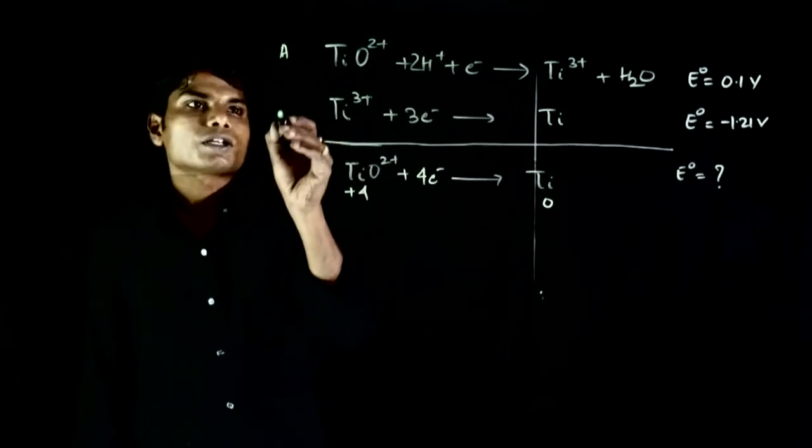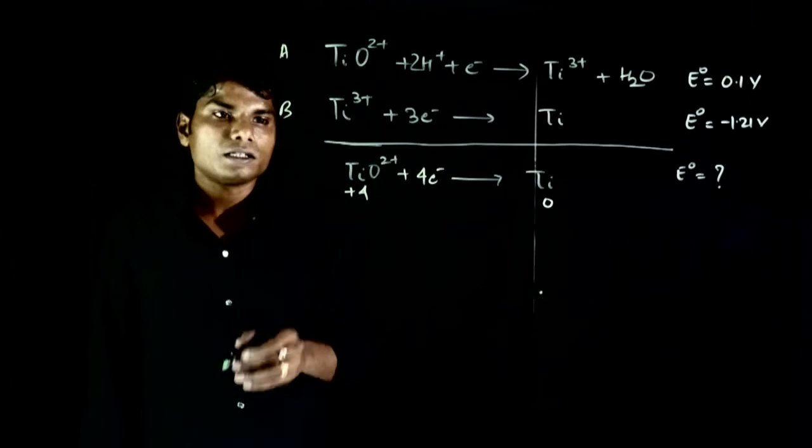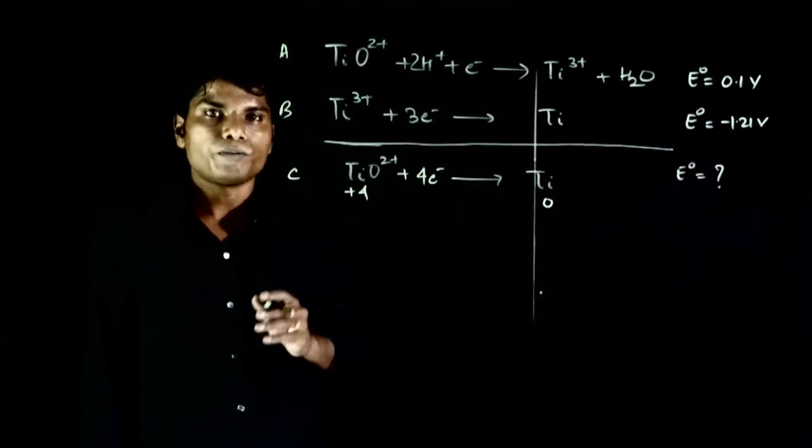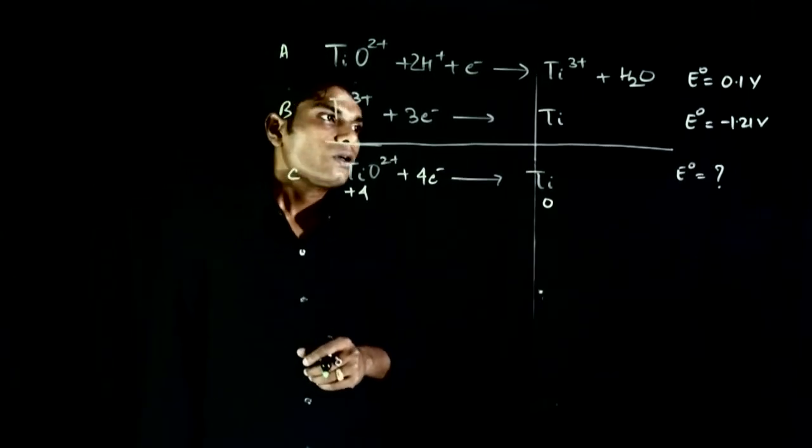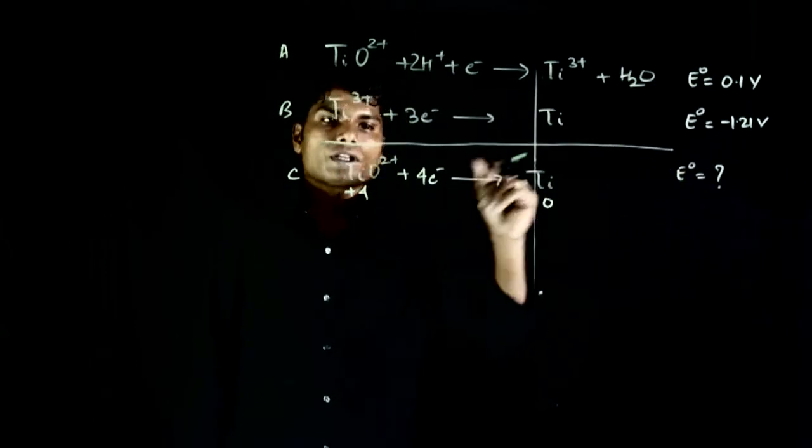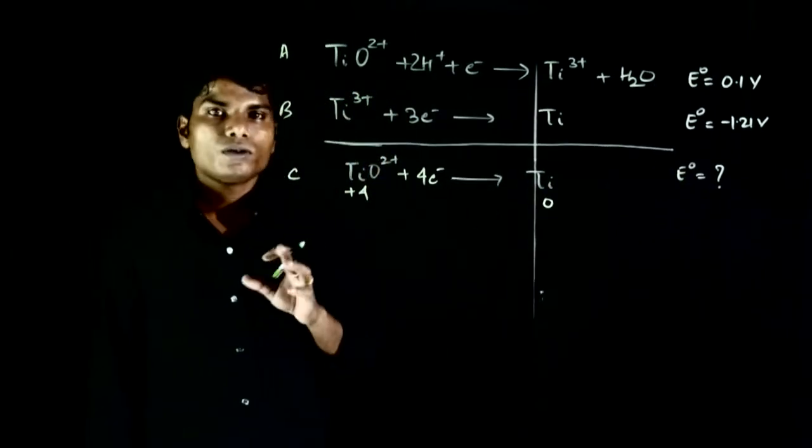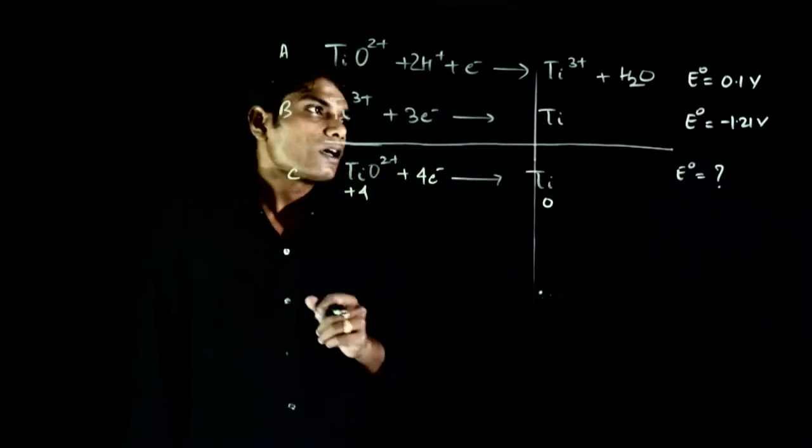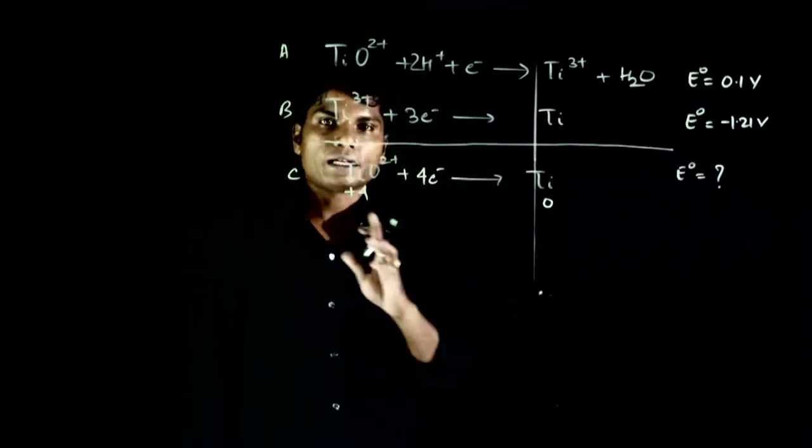Reaction A and reaction B, you can add them. So you will get reaction C. So, what will be its Ea? So, you see, in this, we cannot simply add these two.